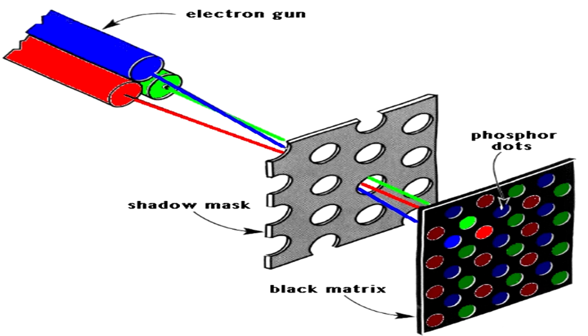The electron beam from the red gun would hit the red dots, the electron beam from the blue gun would hit the blue dots, the electron beam from the green gun would hit the green dots.